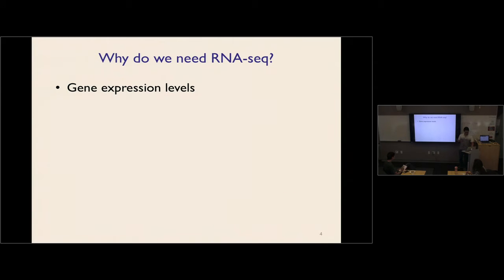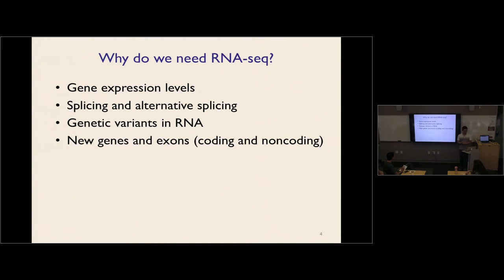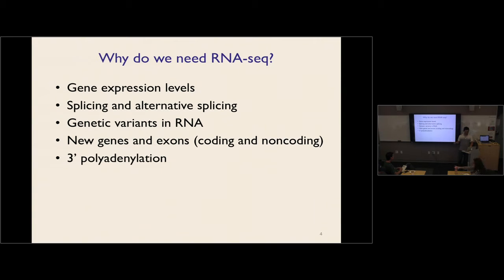Why do we need RNA sequencing? You probably want to measure gene expression levels, measure splicing and alternative splicing. Sometimes you even want to identify genetic variants in the RNA. By doing RNA sequencing, you can identify new genes and new exons — something conventional microarray methods cannot deliver, because with microarrays you have to design probes based on things you already know. We can also measure polyadenylation and 5' capping, among many different applications.